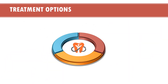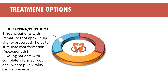There are different treatment options available. The first is pulp capping and pulpotomy. These are used under two circumstances: first, when the patient is young and the root apex is immature, and pulp vitality can be preserved to stimulate root formation — a procedure called apexogenesis. Second, when the patient is young with a completely formed root apex but pulp vitality can still be preserved.